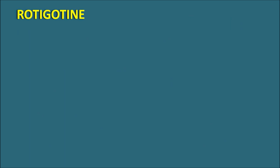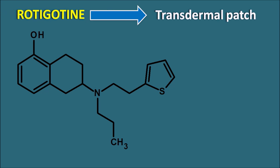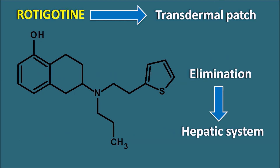Finally, rotigotine. Rotigotine is given by transdermal patches, particularly in the early stage of Parkinson's disease. This drug is also eliminated by the hepatic system, so it can show some drug interactions, but compared with ropinirole, it has somewhat fewer drug interactions. Rotigotine is preferred in the early stage of Parkinson's disease.